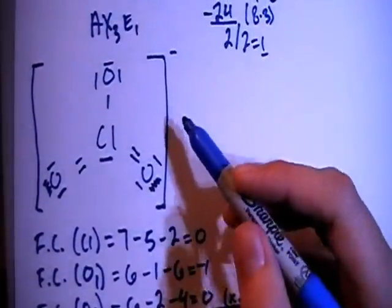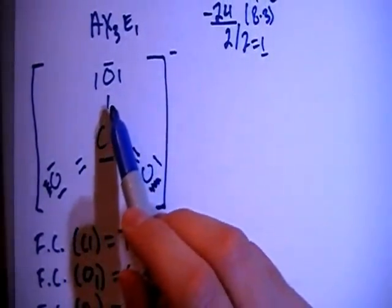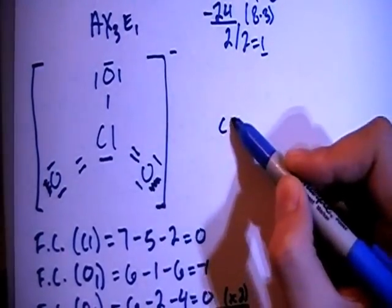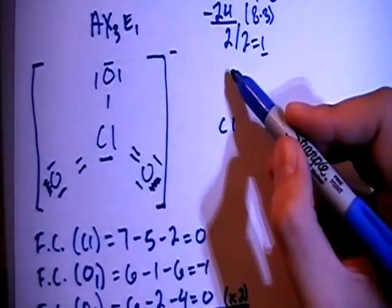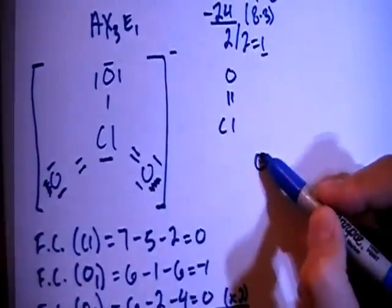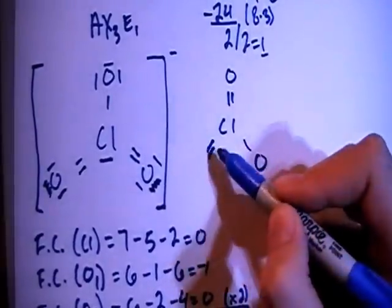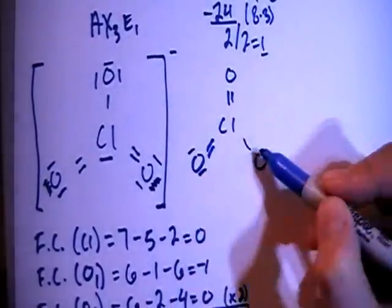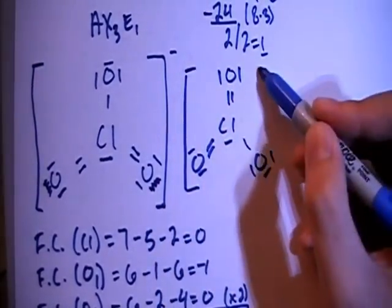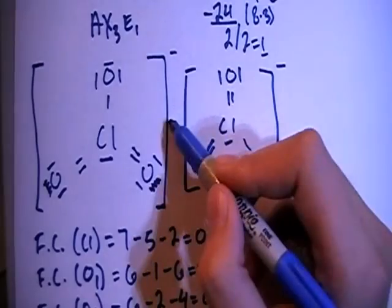Now, because we just happen to choose that this top oxygen has a single bond and these two have double bonds, it could also work out in either of the other two combinations. So we can have the top has a double and the bottom right has single. The bottom left still has a double. So that's one other possibility, and these are going to be your resonant structures.